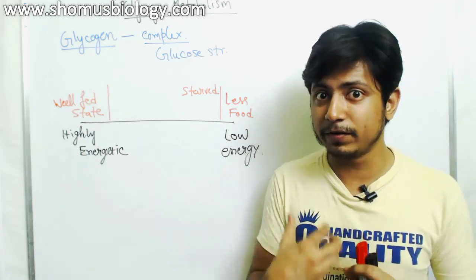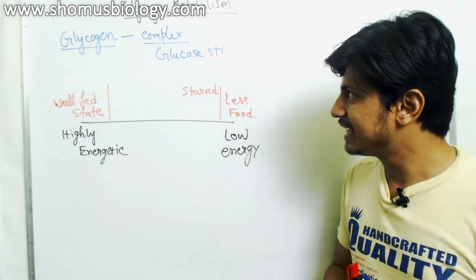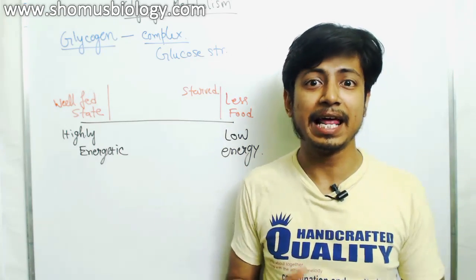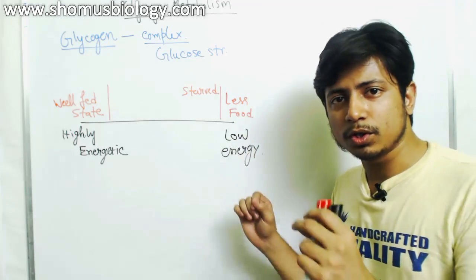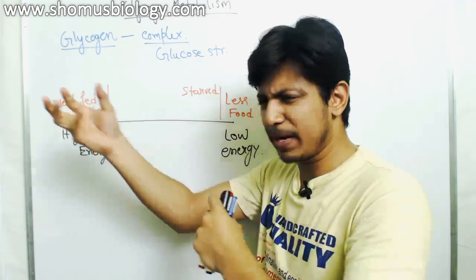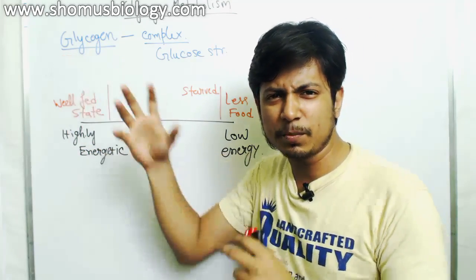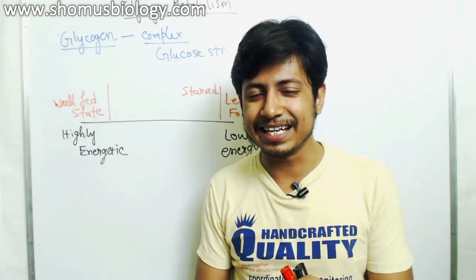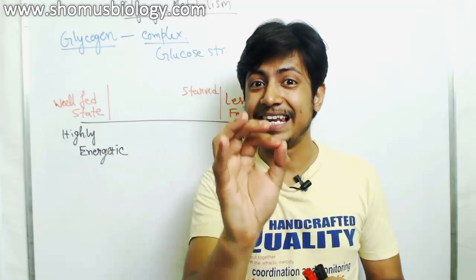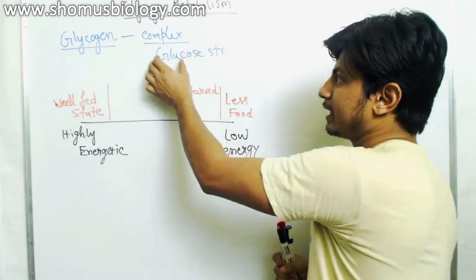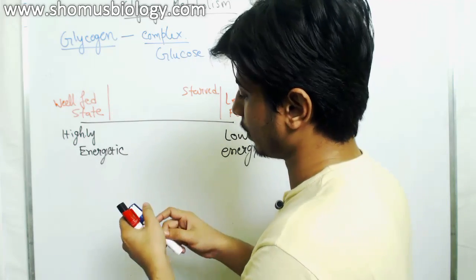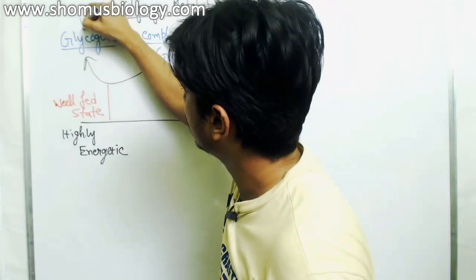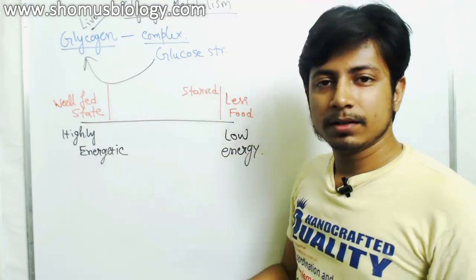The body has a clever way of preserving glucose. Instead of excreting excess glucose, if you combine glucose molecules together, making branches and chains, that forms glycogen. Glycogen is highly branched and takes less space, so you can store more glucose as glycogen in a specific tissue — the liver. So in the well-fed state, we make glycogen from glucose and store it in the liver.